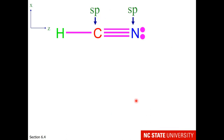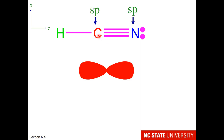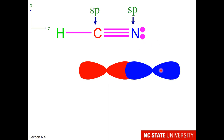Are you ready for a triple bond? We must go there. This carbon and this nitrogen each have two electron regions, which means they are sp hybridized. So the carbon has two red orbitals at 180 degrees from one another, and the nitrogen has two blue orbitals at 180 degrees from one another. With the overlap with the hydrogen, we have a sigma bond between carbon and hydrogen, and one sigma bond between carbon and nitrogen.